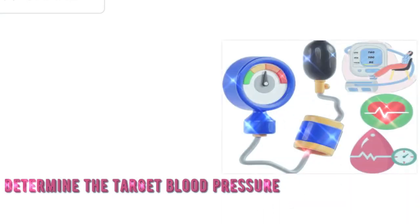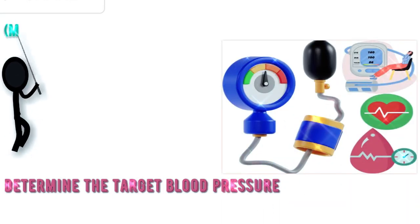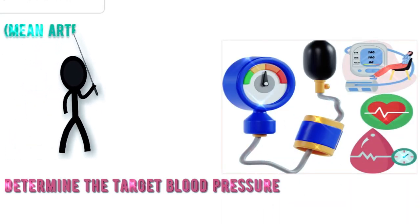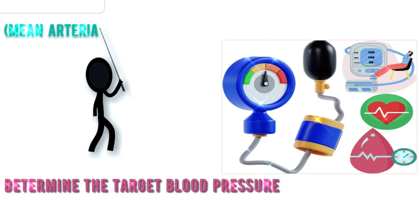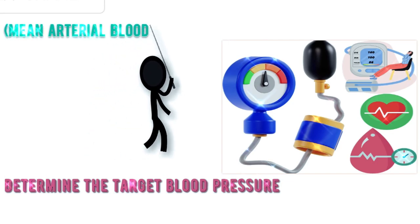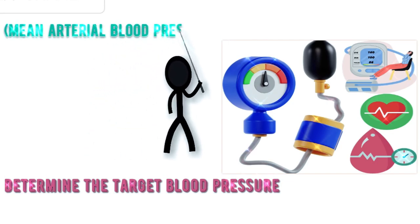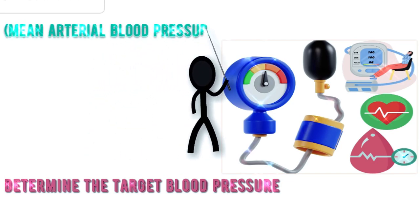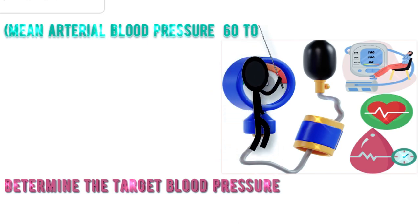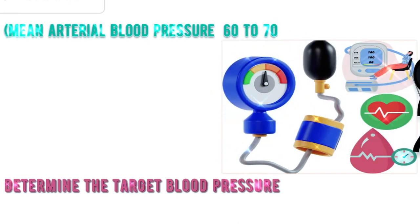We recommend targeting lower levels of blood pressure — mean arterial blood pressure 60-70 mmHg — for resuscitation in patients with hemorrhagic shock.